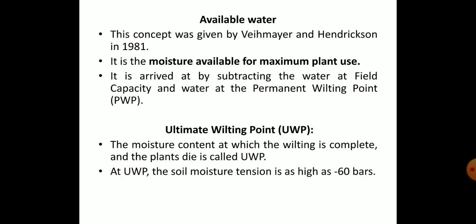Moving on to available water — this concept was again given by Wiemayer and Hendrickson in 1981. It is the moisture available for maximum plant use. As already stated, the upper limit is field capacity and the lower limit is PWP. The water in between field capacity and permanent wilting point is known as available water. By subtracting the water at PWP from the water at field capacity, you get your available water. Any water outside this range becomes unavailable.